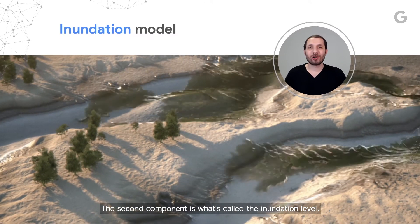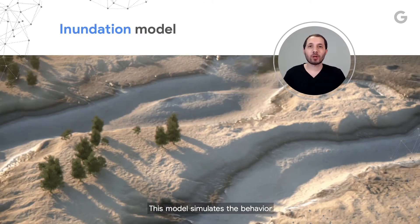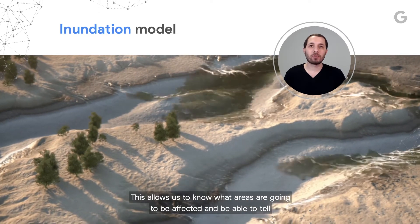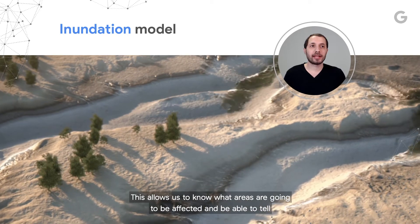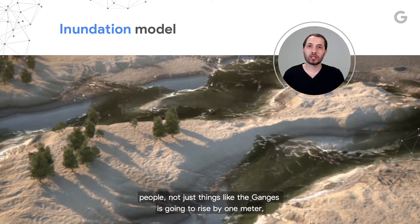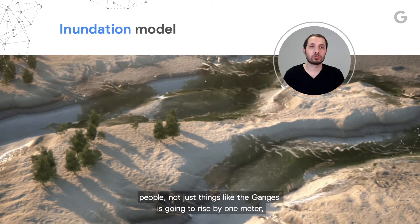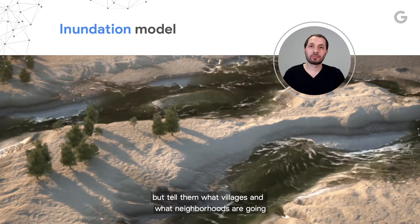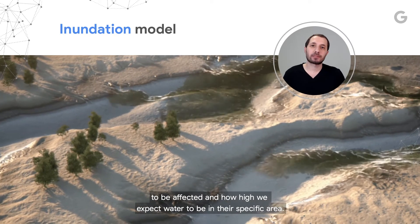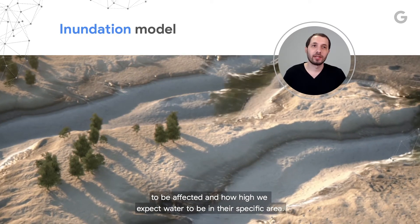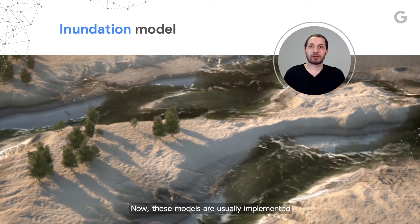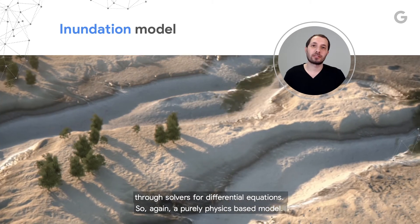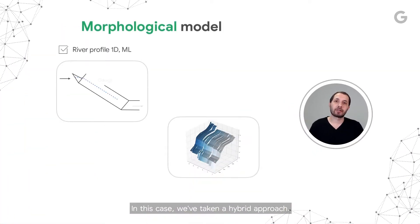The second component is what's called the inundation model. This model simulates the behavior of the water as it moves across the floodplain. This allows us to know what areas are going to be affected, and be able to tell people not just things like 'the Ganges is going to rise by one meter,' but tell them what villages and what neighborhoods are going to be affected, and how high we expect water to be in their specific area. These models are usually implemented through solvers for differential equations — a purely physics-based model. In this case, we've taken a hybrid approach.